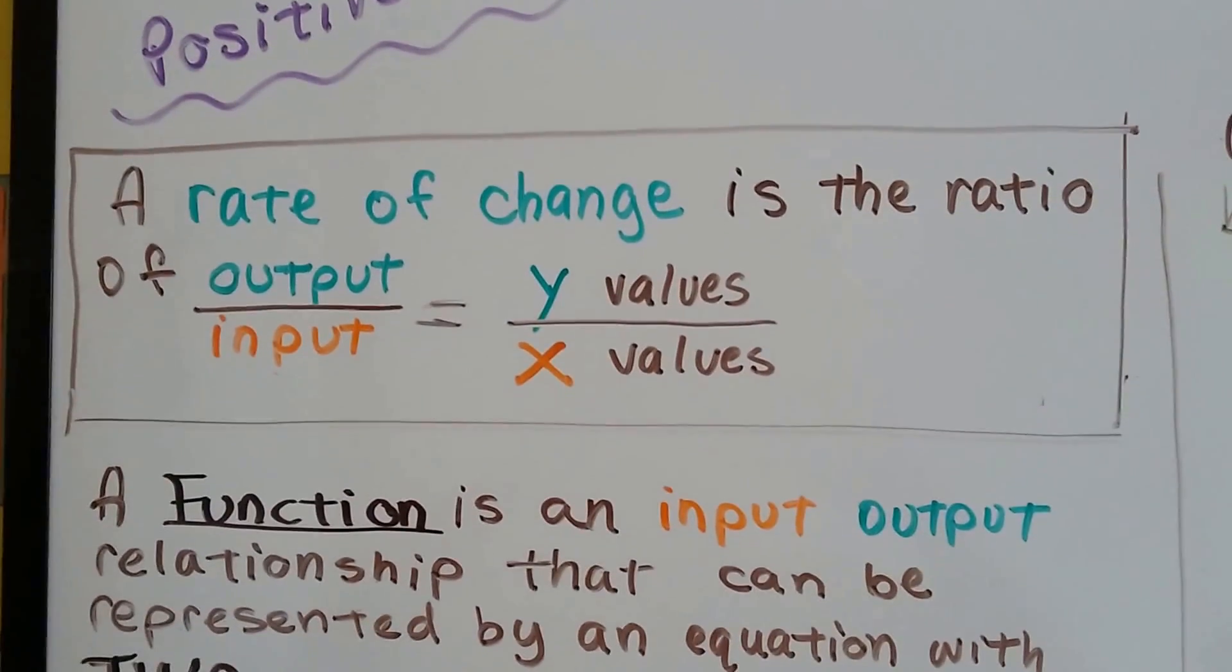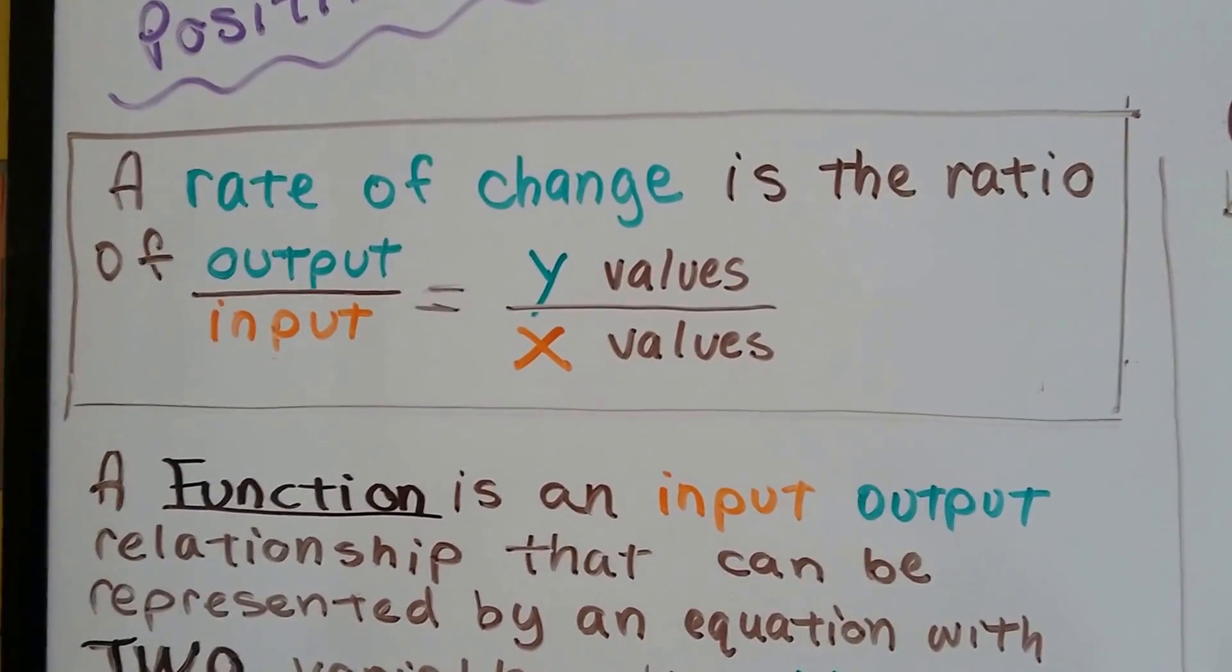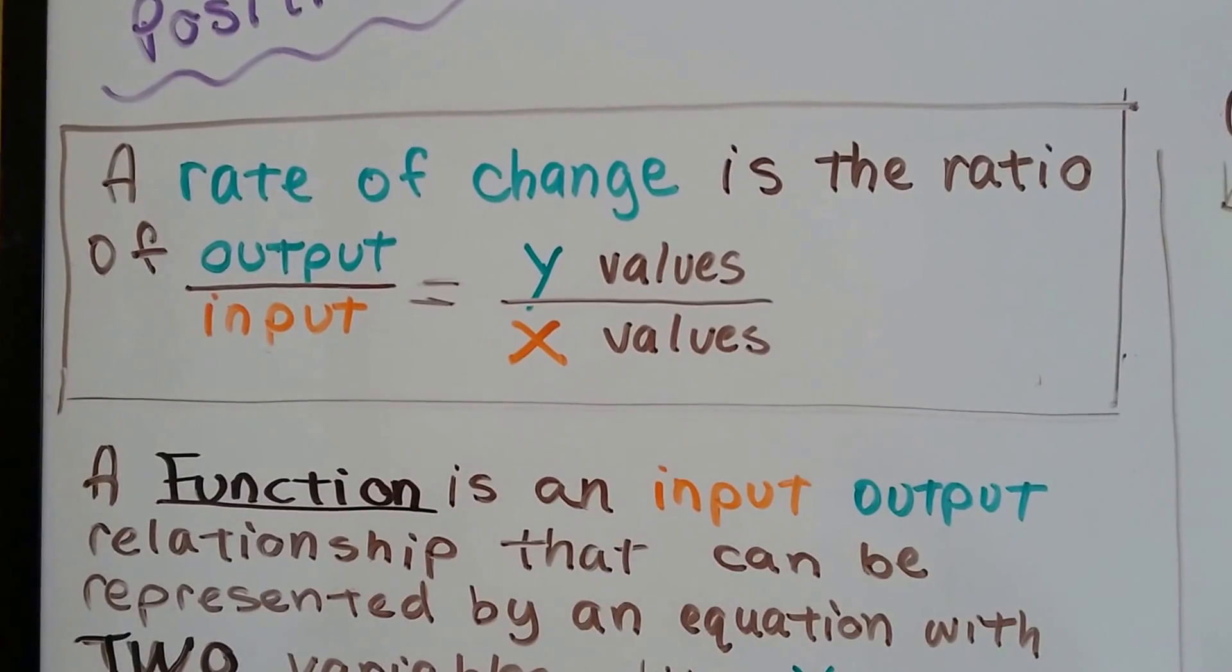A rate of change is the ratio of output over input. It's the y values over the x values.